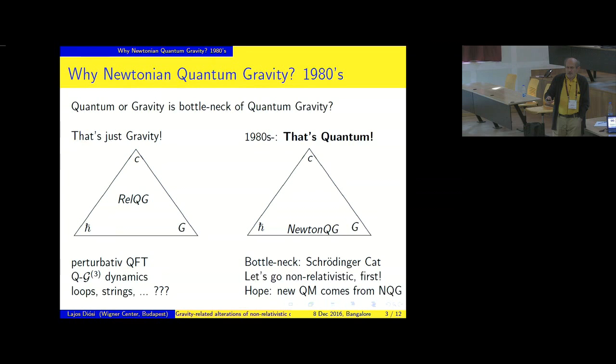If they are the bottleneck, then since they are typical non-relativistic issues, like Schrodinger-Cat or wave function collapse, even if the latter has serious conflicts with relativity, it deserves to go non-relativistic first. To try to settle the issue, the conflict between gravity and quantization at the non-relativistic level. And the hope is that some new quantum mechanics may come from the so-called Newtonian quantum gravity, which is just the non-relativistic projection of the not yet existing relativistic quantum gravity. So we go here, and this is what we are talking about right now.